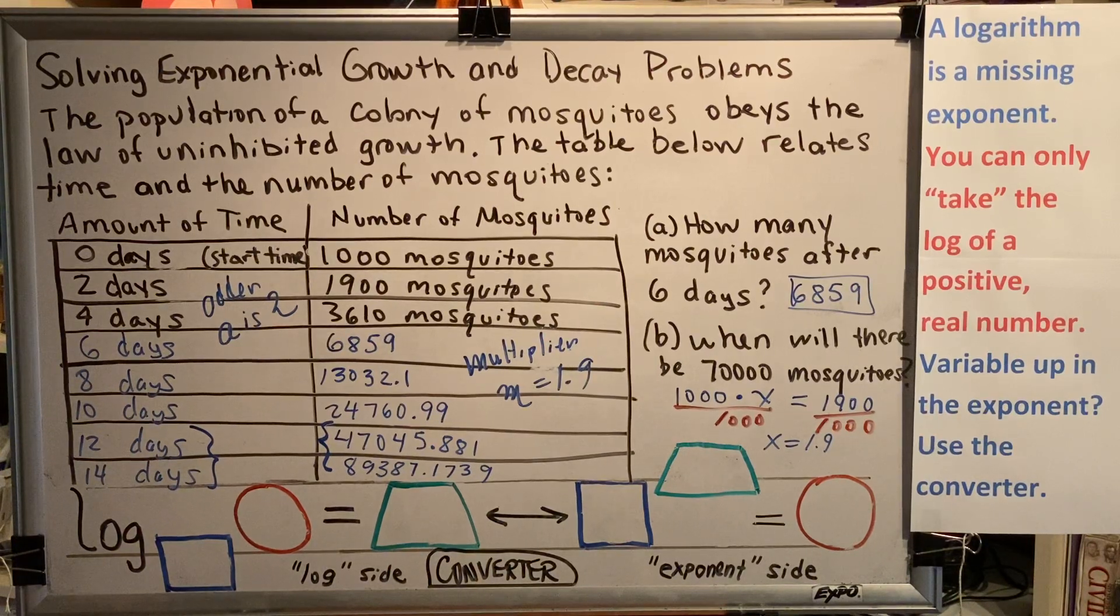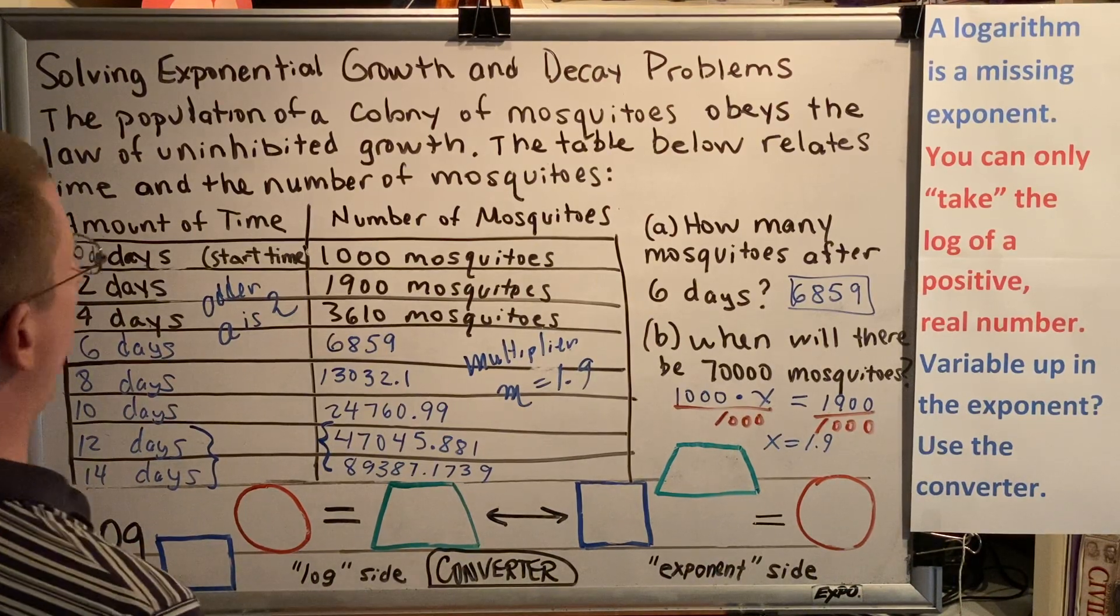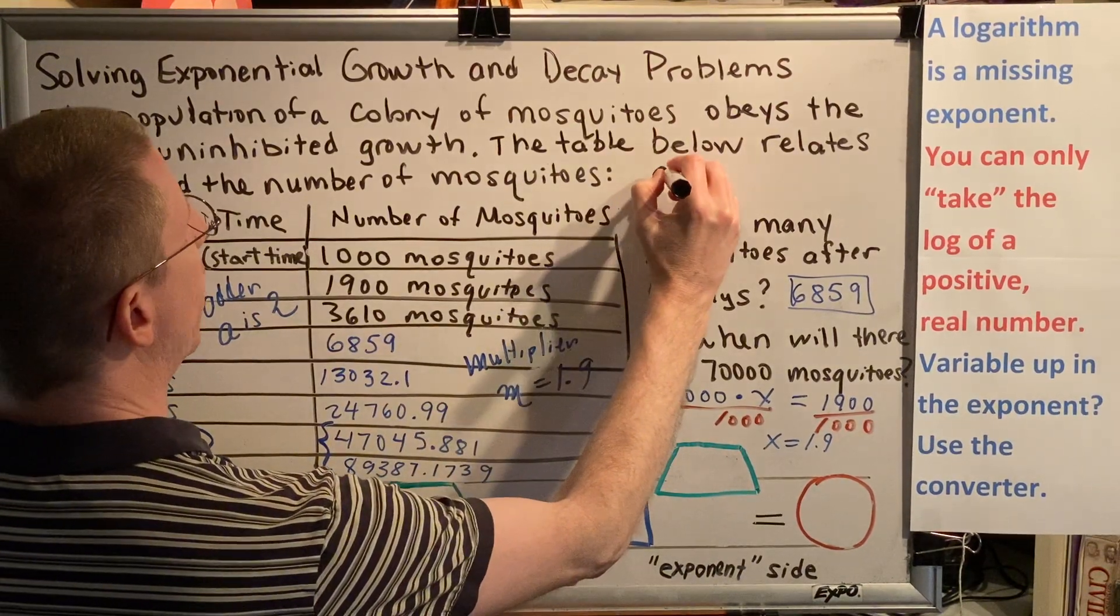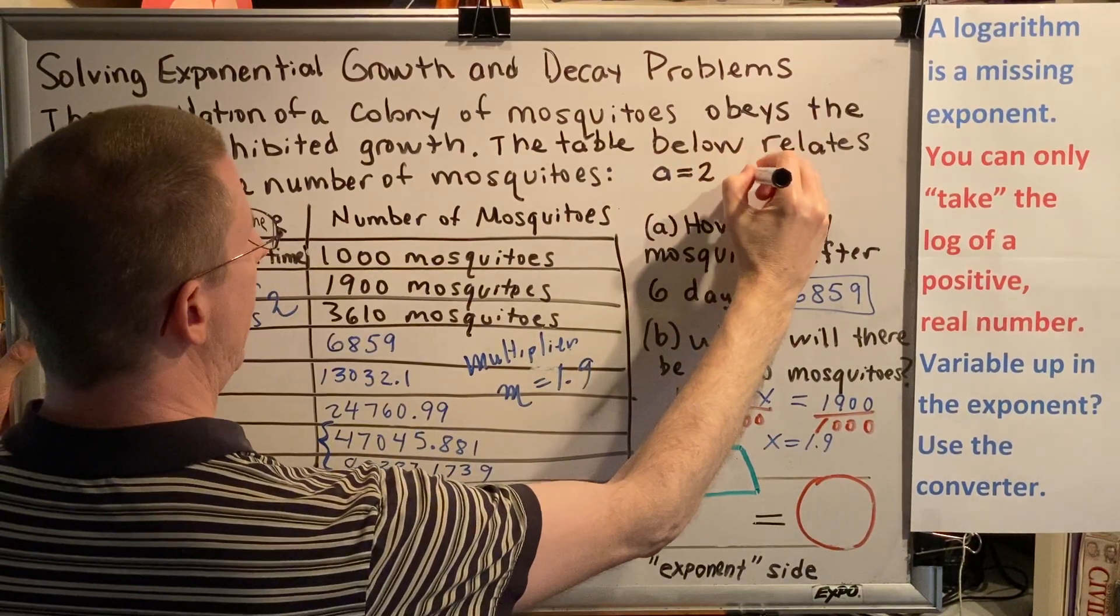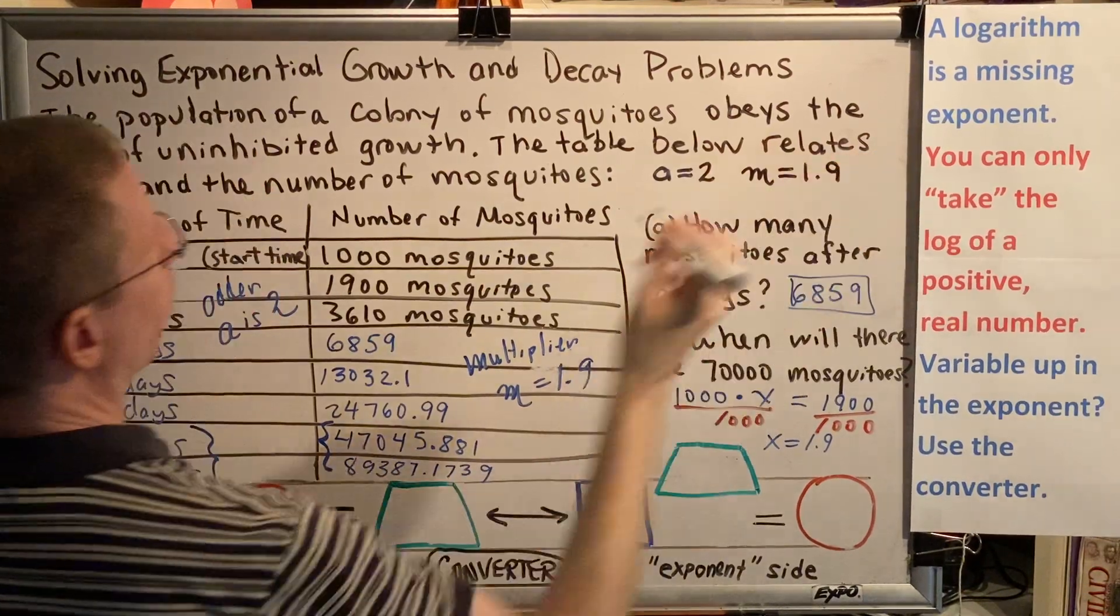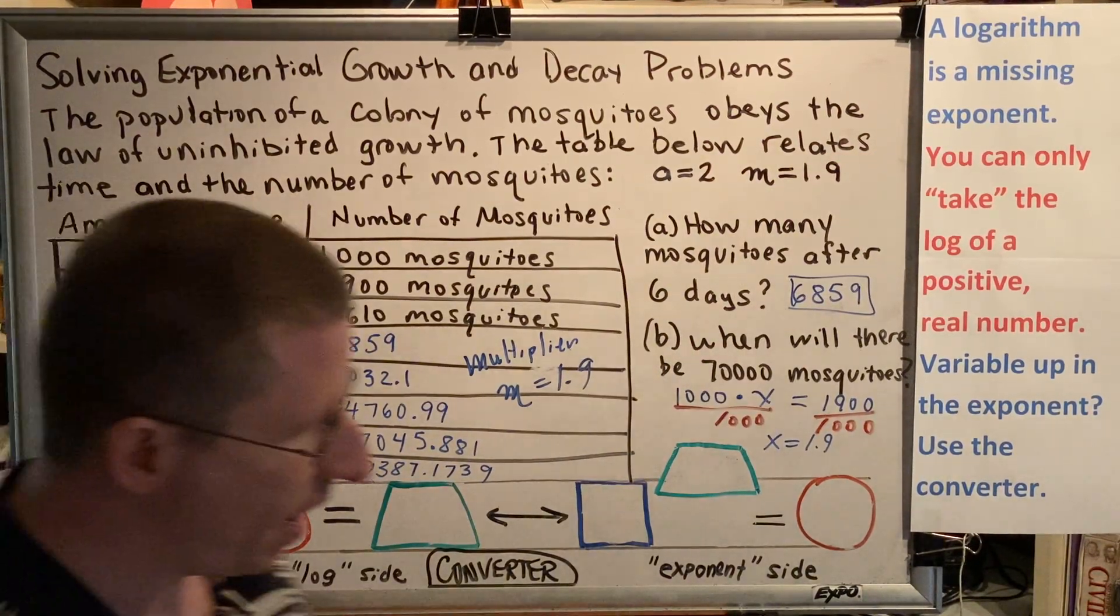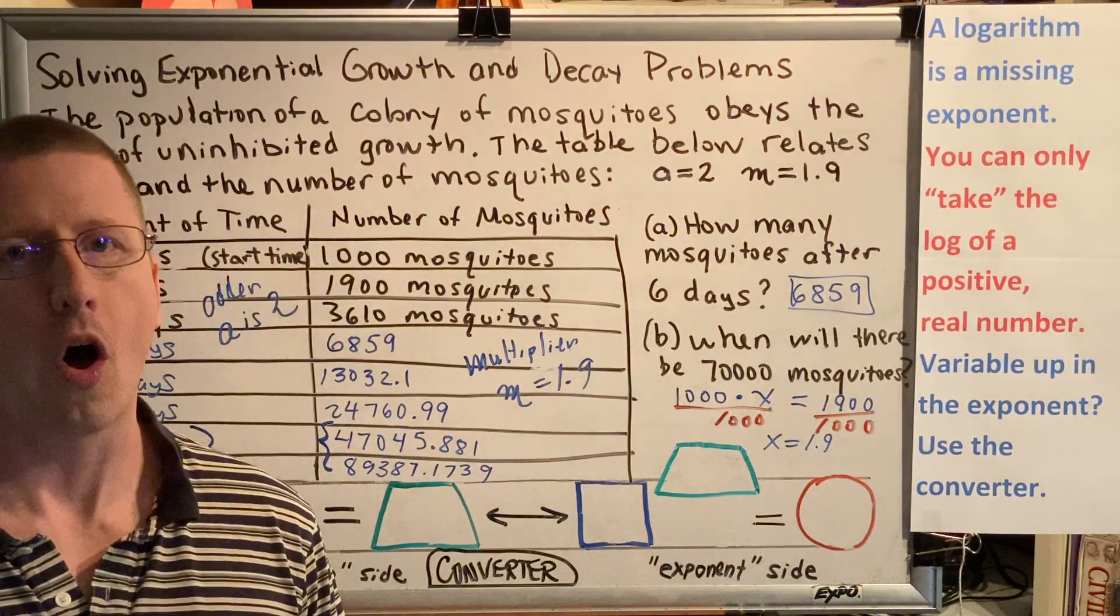To use the exponential law equation, we're going to need to remember the adder and the multiplier, because we're going to need that for our value of K. So let's just write those down really quickly. A equals 2 and M equals 1.9. We're going to stop this video for now. And in the next video, we'll finish this problem and we will use the exponential law equation.